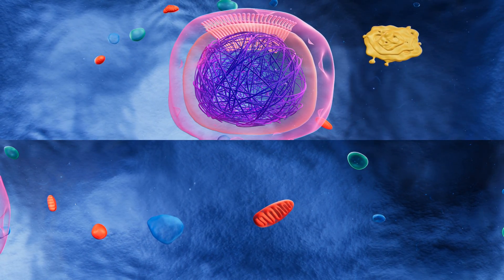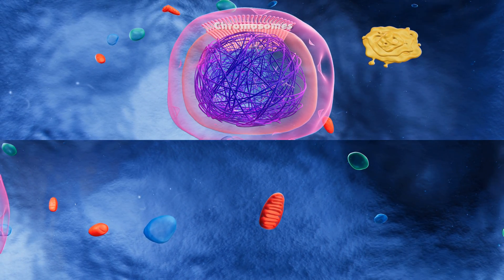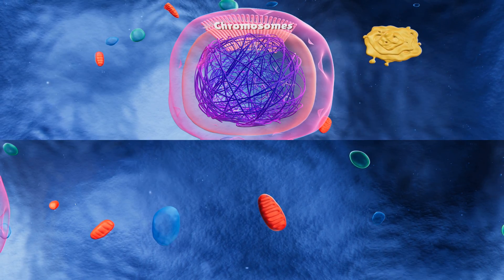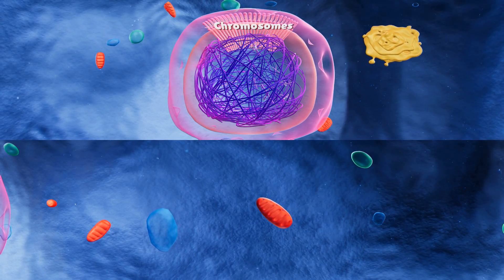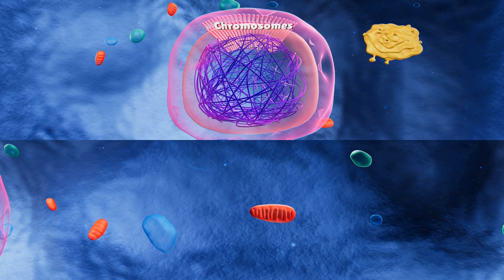When the cell is getting ready to divide, the DNA arranges itself to form chromosomes. This DNA is packed very tightly. If we unraveled all the DNA in just one human cell, it would be over 6 feet long.